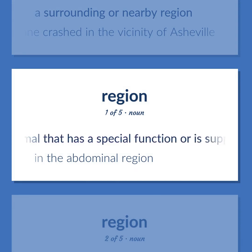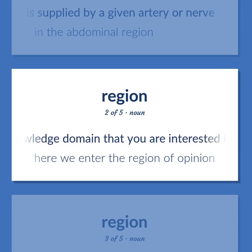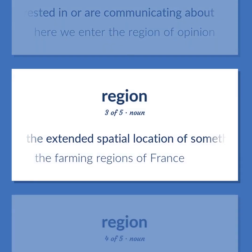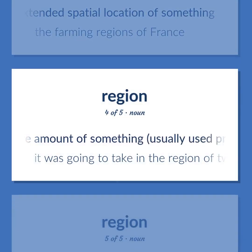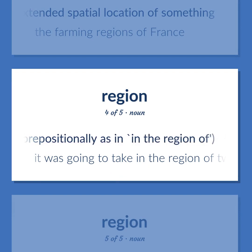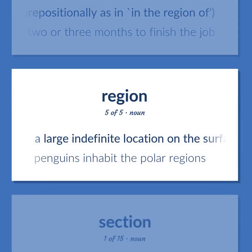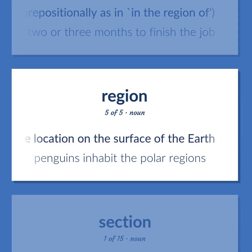Region: a part of an animal that has a special function or is supplied by a given artery or nerve — in the abdominal region. A knowledge domain that you are interested in or are communicating about — here we enter the region of opinion. The extended spatial location of something — the farming regions of France. The approximate amount of something — it was going to take in the region of two or three months to finish the job. A large indefinite location on the surface of the earth — penguins inhabit the polar regions.